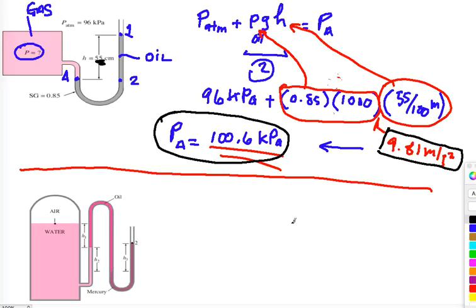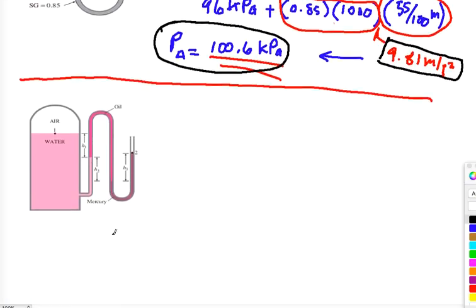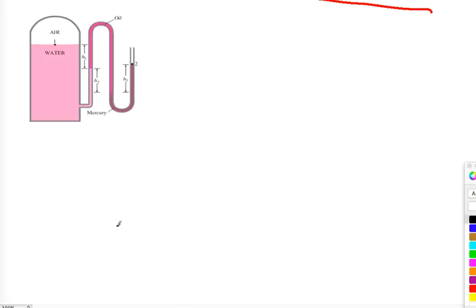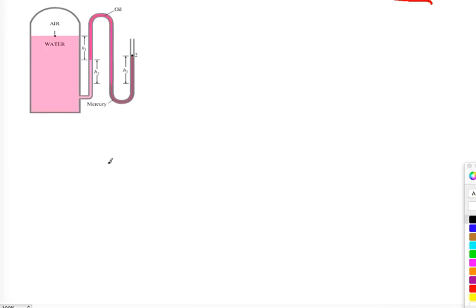Okay, now coming back to the new question that we have here. What I have on the diagram is the manometer with multiple fluids. We have mercury, we also have oil, and we also have water. And there's also an air trap inside the tank.